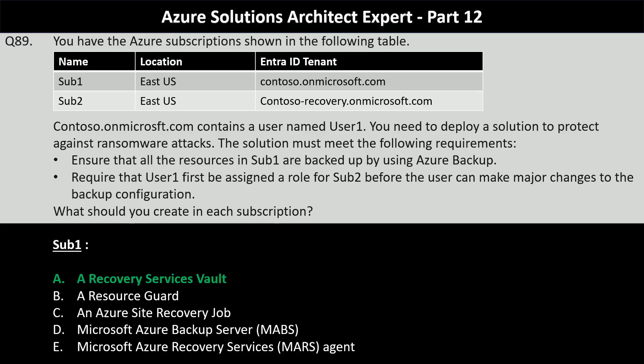The second part of the question asks what should you create in Sub2, with the same five options. A resource guard helps protect backup and recovery configurations by requiring additional authentication and authorization before any critical operations — such as disabling backups or deleting recovery points — can be performed. It ensures that User1 must be assigned a role for Sub2 before making major changes.